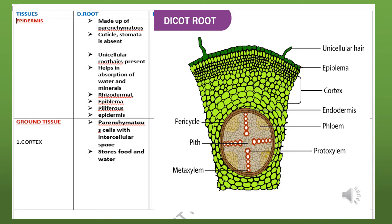Now let's see about epidermis. Here you can see a picture. The outermost layer is called epidermis. This layer is otherwise called the rhizodermal layer, epiblema, piliferous layer, or epidermis — so there are different names for this layer.